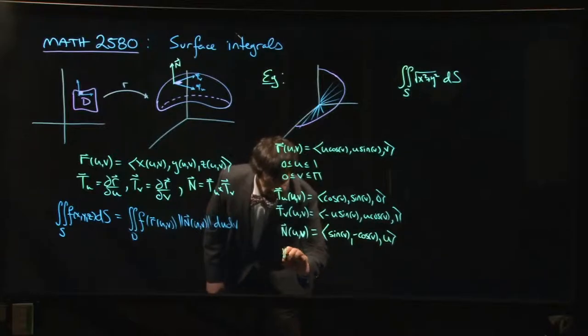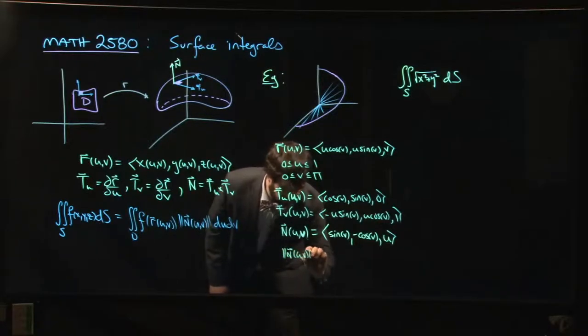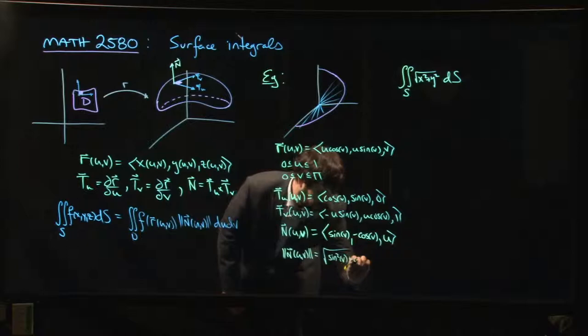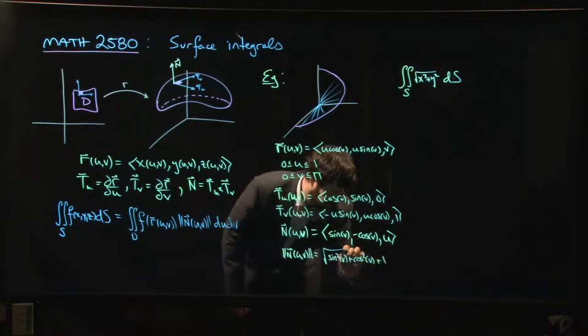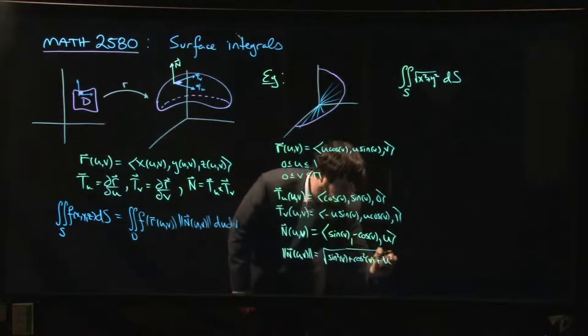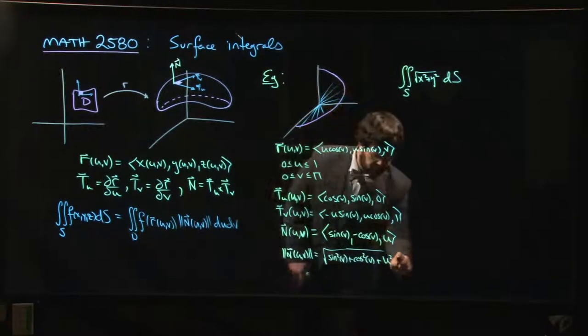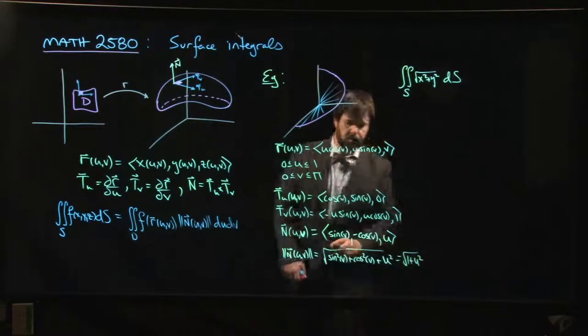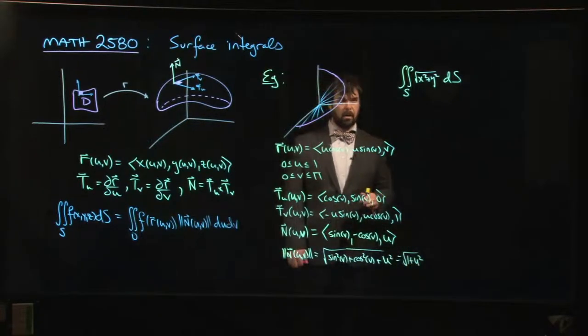So we can compute the magnitude. The magnitude of the normal vector will be the square root of sin squared v plus cos squared v plus u squared. So that's simply the square root of 1 plus u squared.